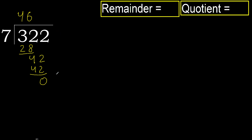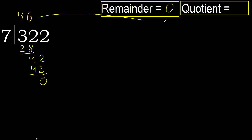That is not a number, therefore finish it. 322 divided by 7 is 46.